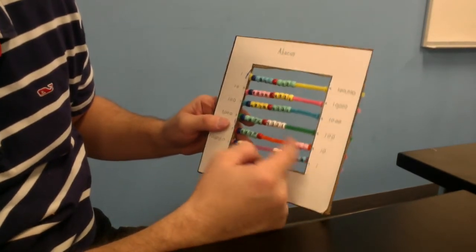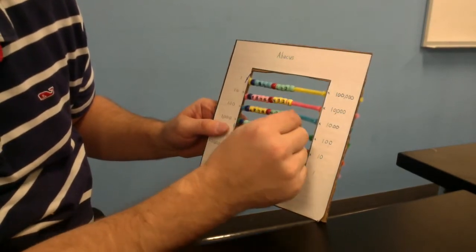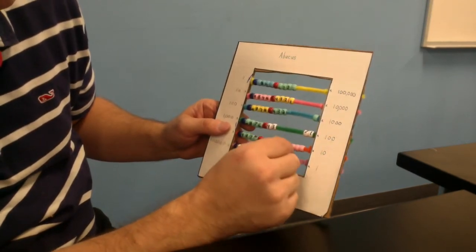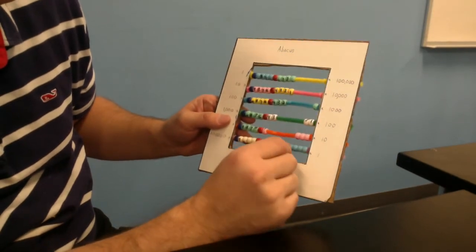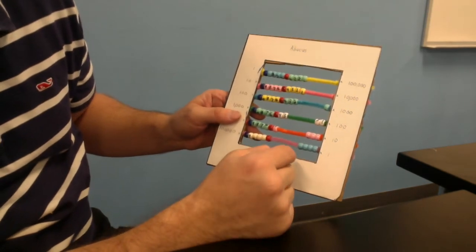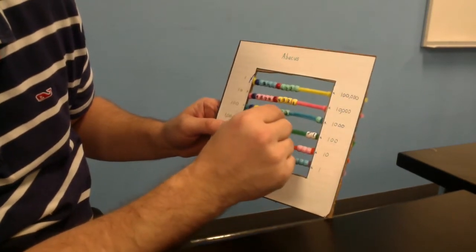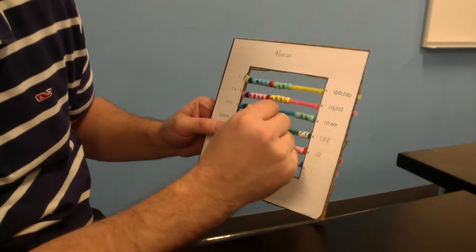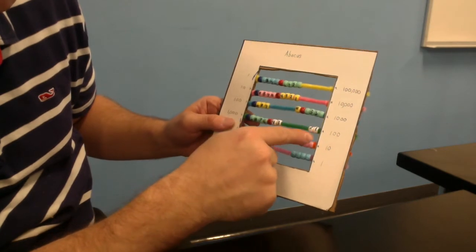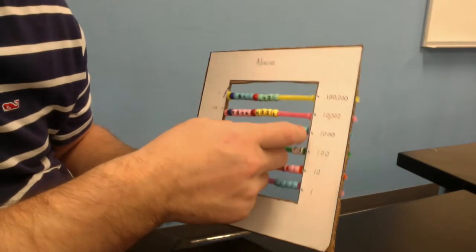You can also use this for very big numbers, such as, let's say 1,234, 1, 2, 3, 4. 1,234 plus 5,000, 1, 2, 3, 4, 5. Plus 5,000 would be 6,234. You can also use this for subtraction.